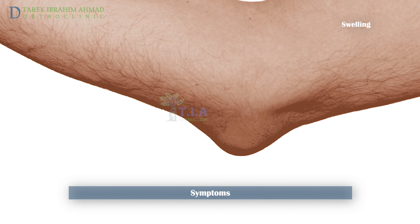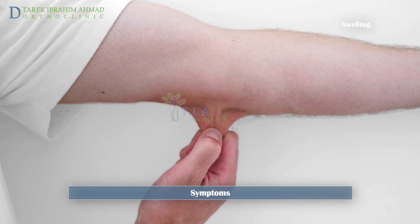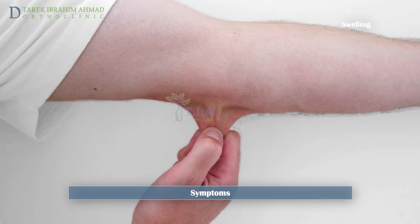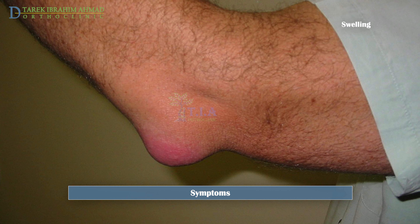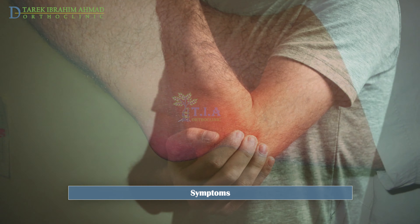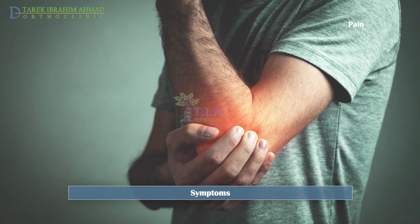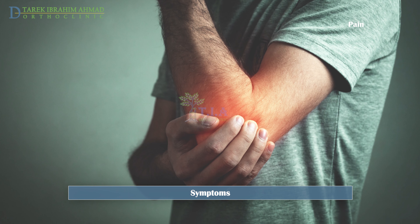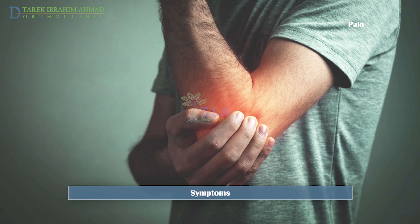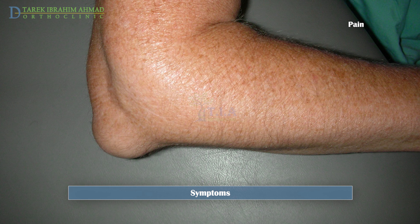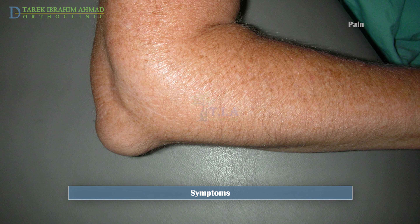Swelling is usually the first symptom you'll notice. The skin on the back of the elbow may be loose, so you may not see the swelling at first. In some cases the swelling flares up quickly and you might notice it right away. As the swelling continues, the bursa begins to stretch, which causes pain. The pain often worsens with direct pressure on the elbow. Some people with elbow bursitis don't feel any pain whether their elbows are flexed or not.